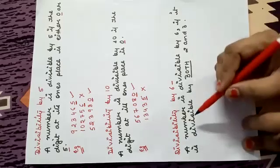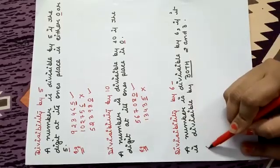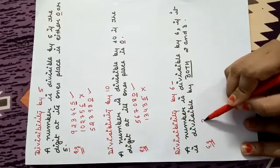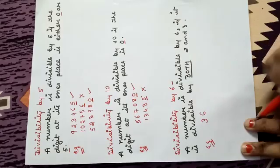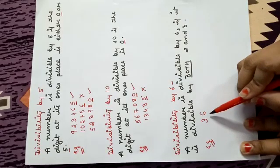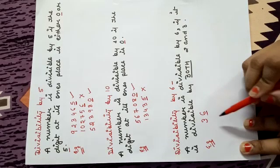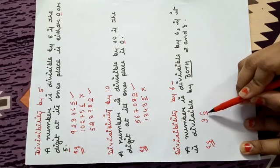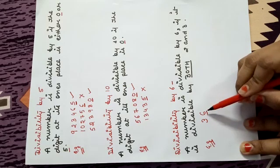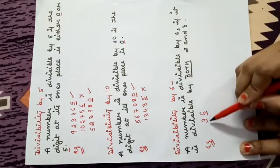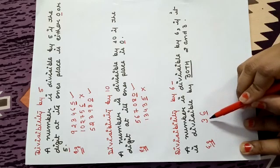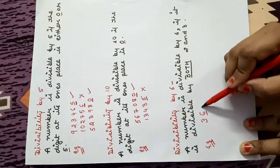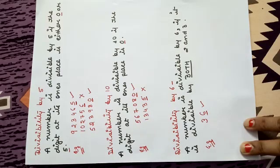See example. If I write 36 — first we will check if it is divisible by 2. At 1's place it is 6, that means it is divisible by 2. Now second, we will check by 3: 6 plus 3 is 9, and 9 is divisible by 3. So this number is divisible by 6.